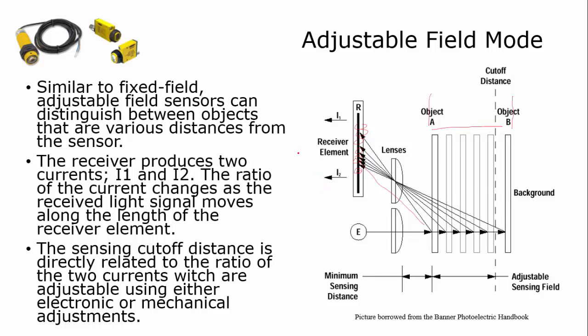From this one I can say, if I get X current, the object is here. If I get Y current, the object might be here. So by reading the current value, I'll know exactly where the object is within the field.